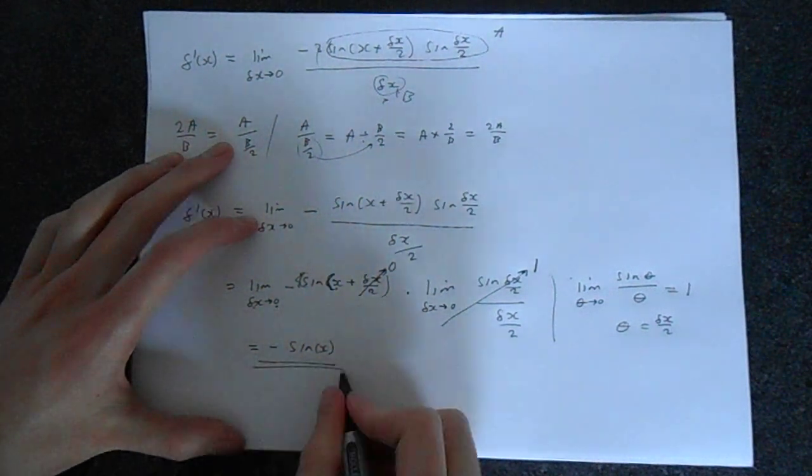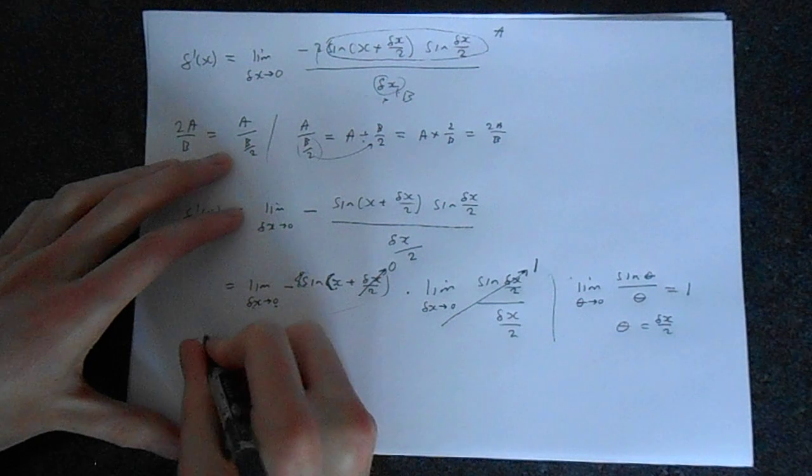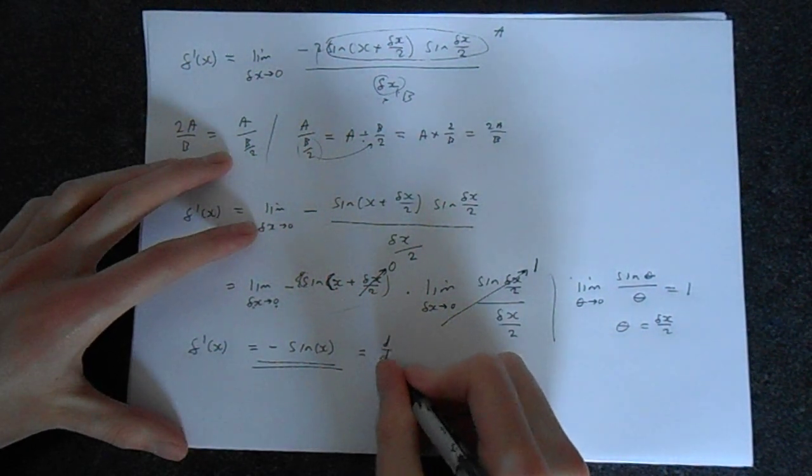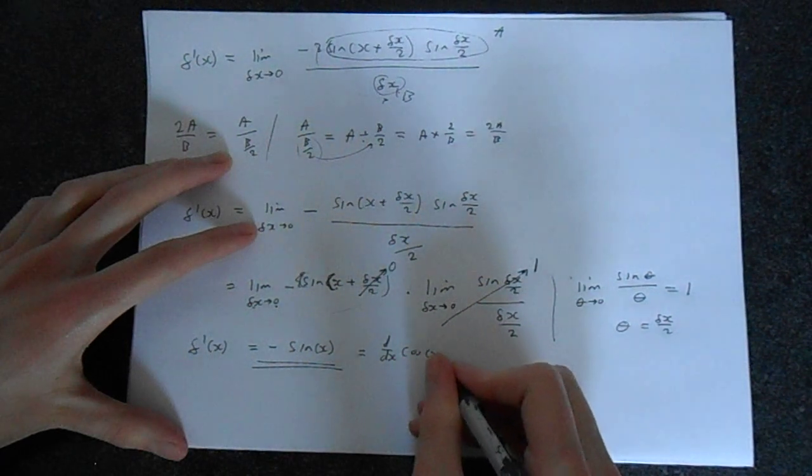And that is exactly what you would expect. So f dash x equals minus sine x. And that is, as we know, d by dx of cos x.